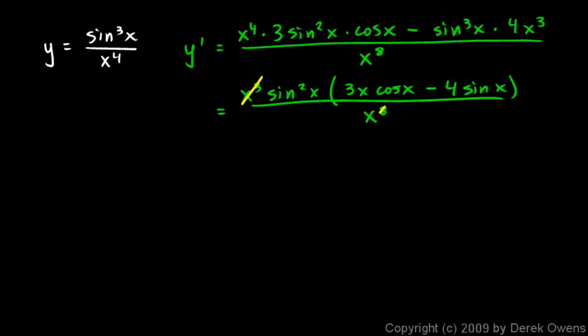And then we can cancel out. The x cubed cancels, and the x to the eighth becomes the x to the fifth. And so our answer is sine squared x times 3x cosine x minus 4 sine x all over x to the fifth.